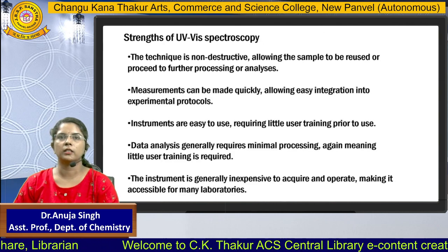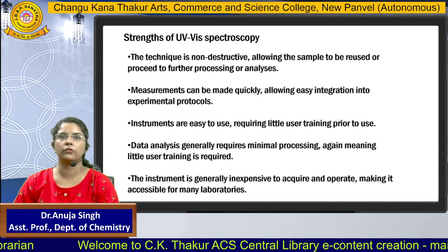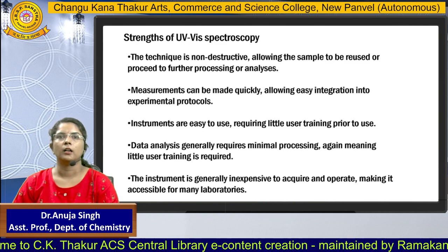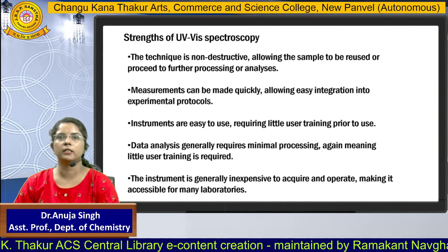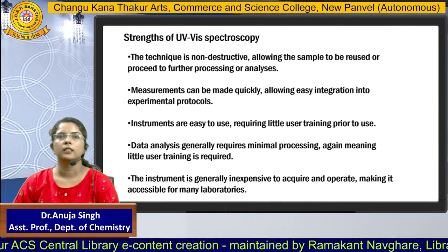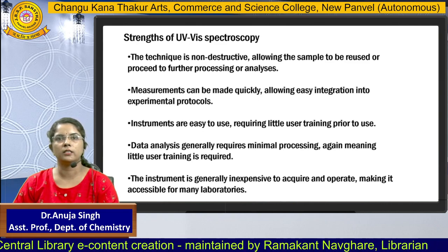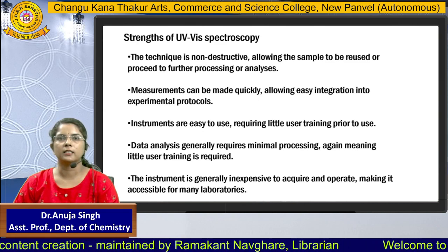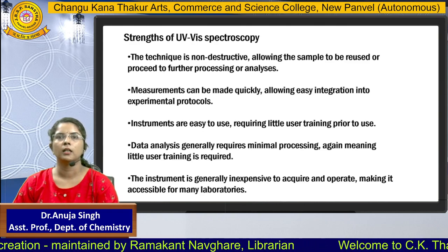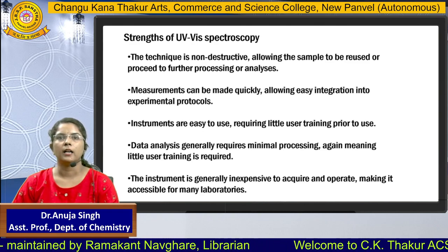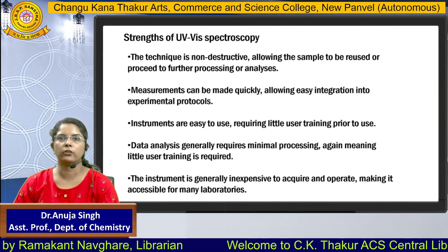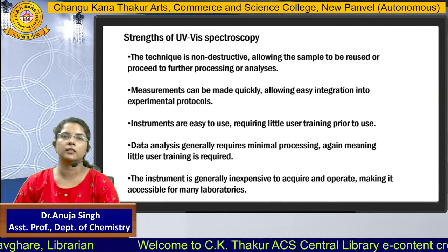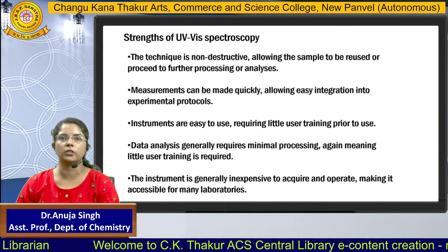What are the advantages of using UV Visible Spectroscopy? This technique is non-destructive, measurements can be done very quickly, and the instrument is easy to use. Data analysis takes minimum processing time, the instrument is generally inexpensive to acquire and operate, and it is simply available in most chemistry laboratories.